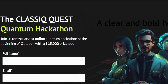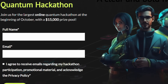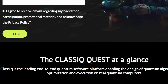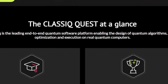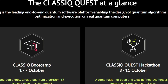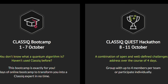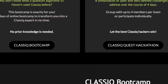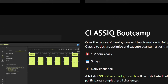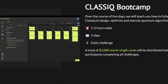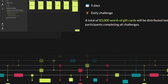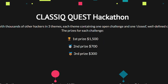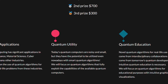The Classic Hackathon — the Classic event includes a boot camp as well as a hackathon. The boot camp is a five-day event in which they teach you how to fully use Classic to design, optimize, and execute quantum algorithms. Compete with thousands of other hackers in three teams; each team contains one open challenge and one well-defined challenge. Quantum computing has significant applications in chemistry, finance, material science, cybersecurity, and many other industries. This event focuses on the use of quantum algorithms for addressing real-life problems from these industries, with six challenges in total — two for each theme — and you can compete in as many as you want.